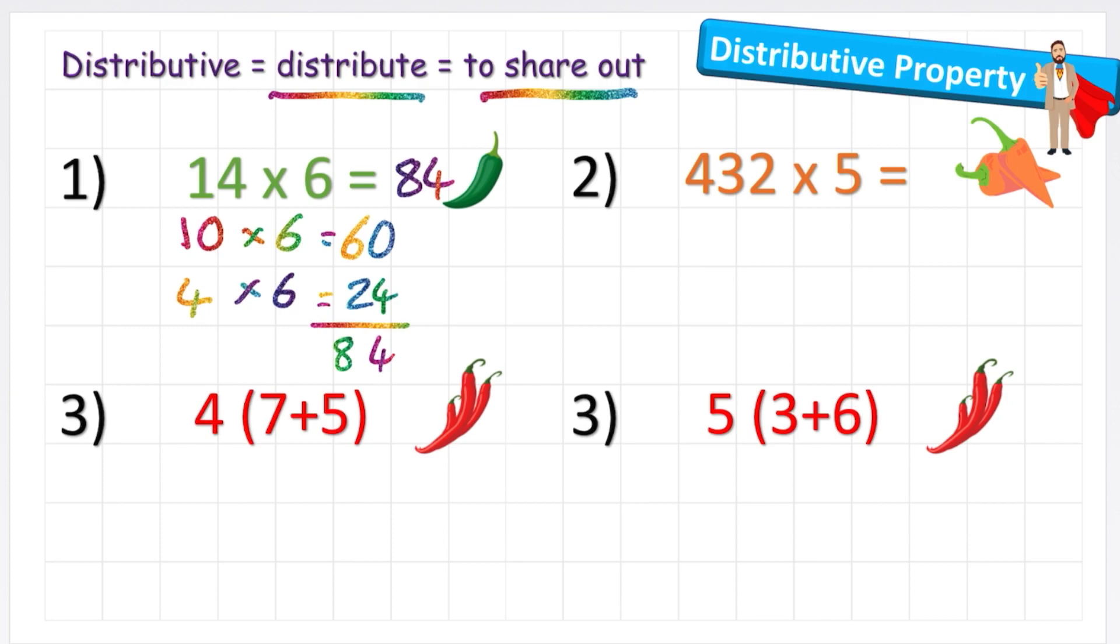432 times 5 is obviously a difficult question to answer. But if I work out quickly what 400 times 5 is, then look at my 30 times 5 and then my 2 times 5, I can do those numbers quite easily in my head.